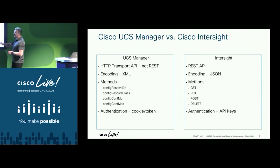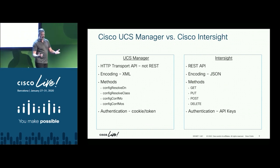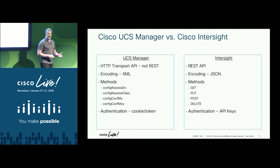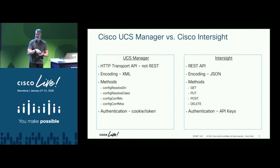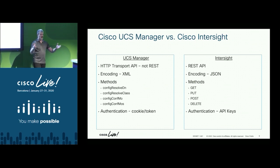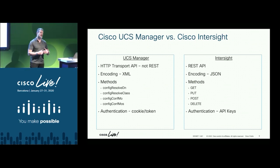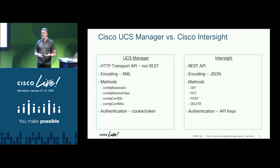We have methods, and the methods are in the XML: ConfigResolveDN to look up a distinguished name, ConfigResolveClass to look up a class, ConfigConfMO to configure a managed object, ConfigConfMOs to configure multiple managed objects. Those are encoded into the XML sent over HTTP. Authentication is a cookie or token — you log in, get back this long string of characters, and must send it with every request so UCS Manager knows your rights and capabilities.